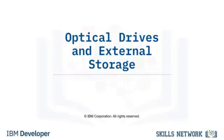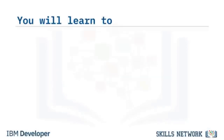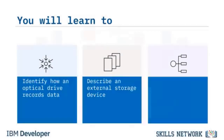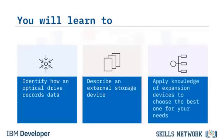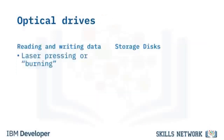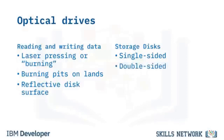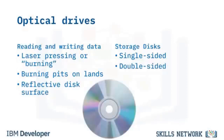Welcome to Optical Drives and External Storage. Data is written to optical devices through a laser pressing or burning the disk, creating recessed areas (pits) and raised areas (lands). The laser reads and writes data on the reflective surface. Single-sided disks have one recordable layer, with storage capacity of 4.7 GB for DVD-ROM and 700 MB for CD. Double-sided disks have two layers and hold twice as much data.